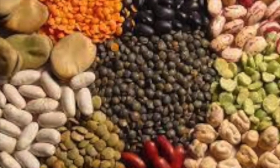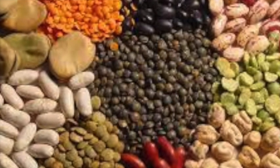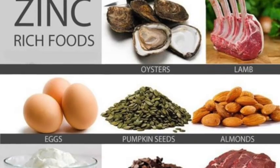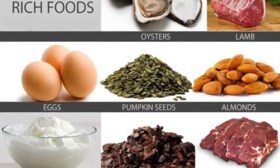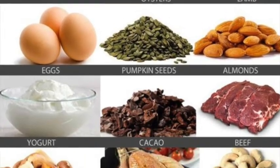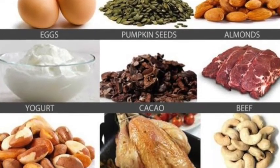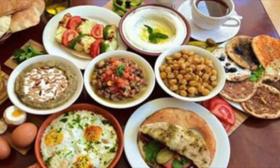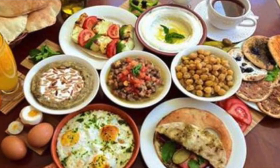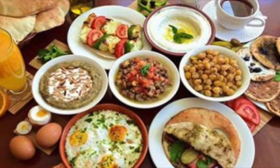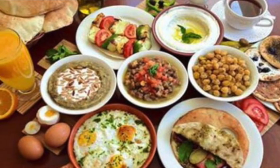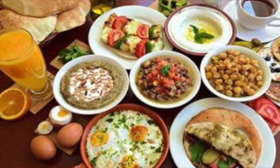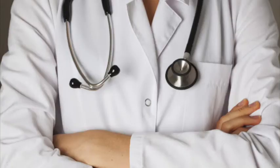Number seven, oily fish one time a week, preferably small fish; number eight, legumes four times a week — peas, lentils, soybeans, etc.; number nine, organic poultry, not fried, two times a week; and the last one, one glass of wine a day.